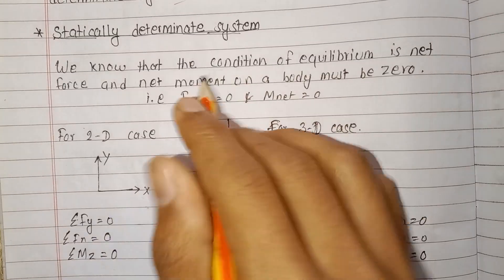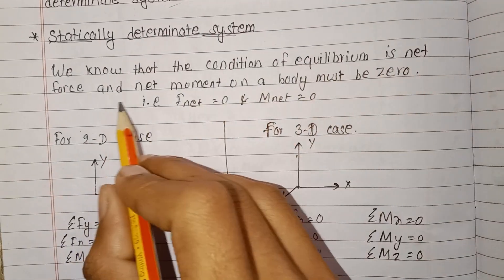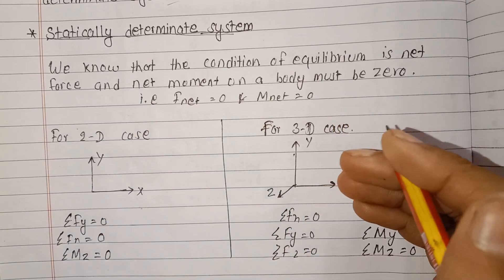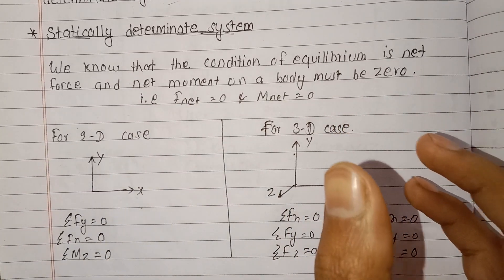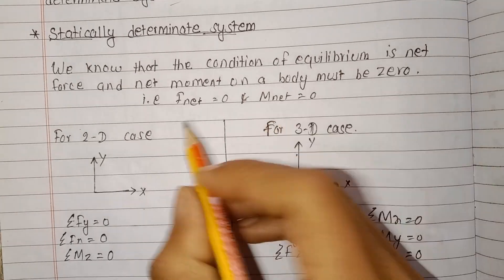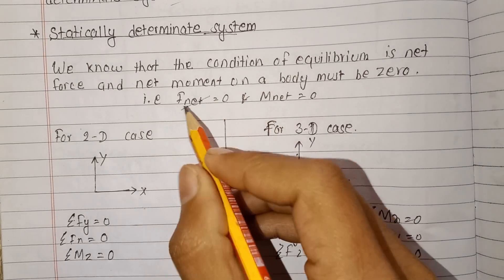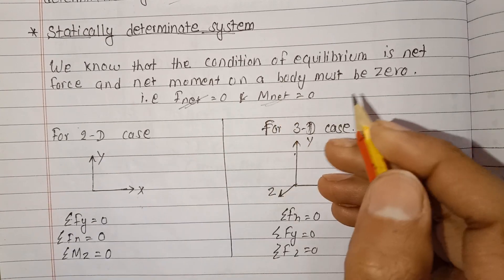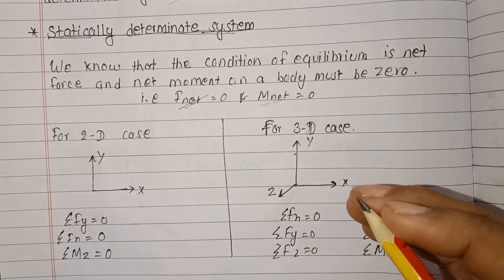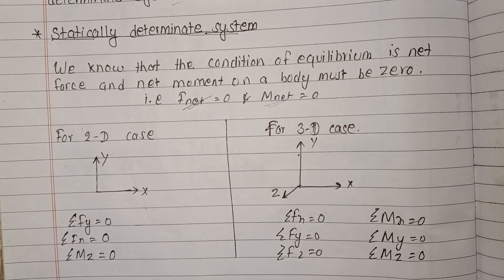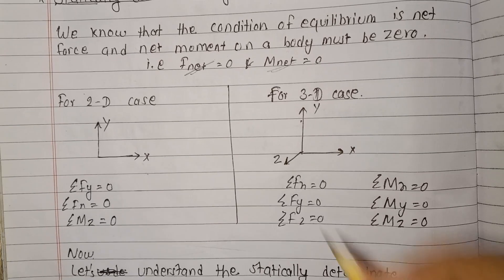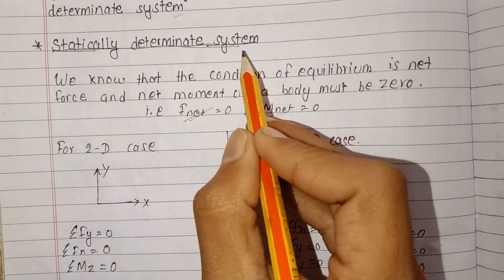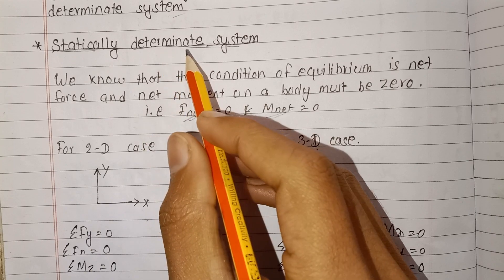We know that the condition of equilibrium is that net force and net moment on a body must be zero. For a body to be in equilibrium, net force must be zero and net moment must also be zero. When these conditions are satisfied, the body is in static equilibrium.